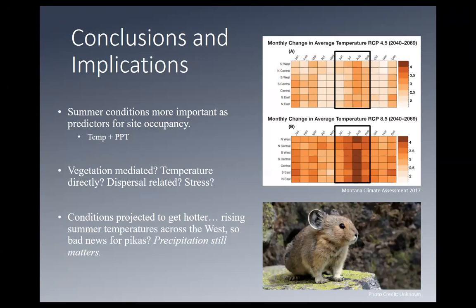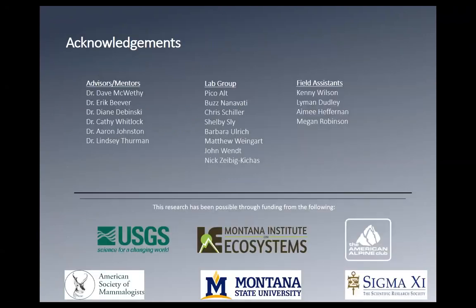Wrapping up: summer conditions appear more important than winter conditions here. Both temperature and precipitation are important — other papers have assessed them separately, but we're trying to bring in both and see the interaction. Next steps: what about summer precipitation and temperature is driving local extinctions in pikas in this region? Is it vegetation-mediated? Is the temperature directly acting on the animals? Is it dispersal-related — can they no longer move between patches? Or is it physiological stress where they become too stressed to breed? The big takeaway message is that precipitation might be able to offset the negative effects of rising temperatures for this species in this ecoregion.